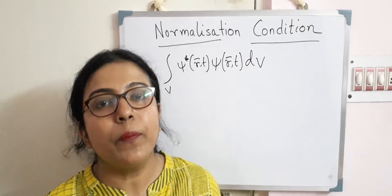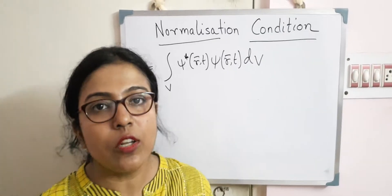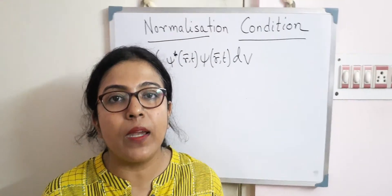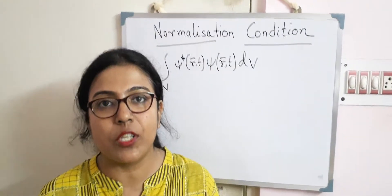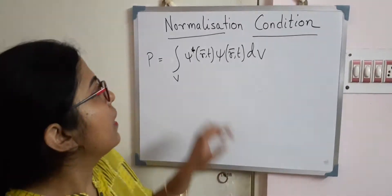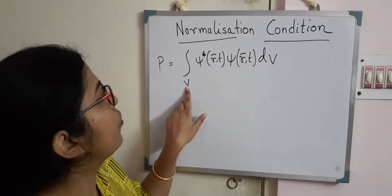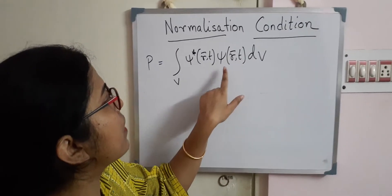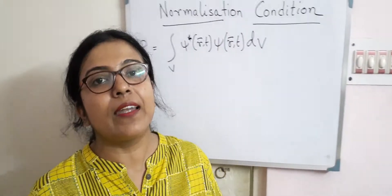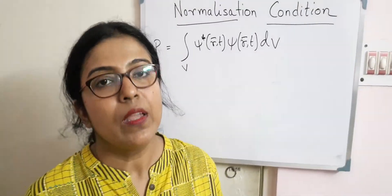Just now in the previous lecture, I mentioned the normalization condition. Now I will explain the normalization condition. What we have seen is that the integral over this volume V of ψ* ψ dV gives the probability of finding the particle within a specified volume V.